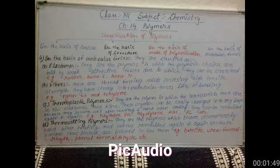The definition of elastomers: they are the polymers in which the polymeric chains are held by weak attractive forces, due to which they can be stretched. Examples include rubber and Buna-N.